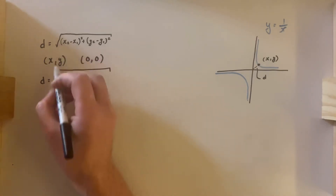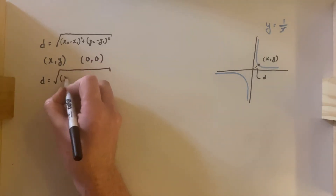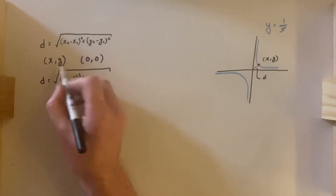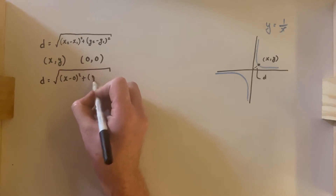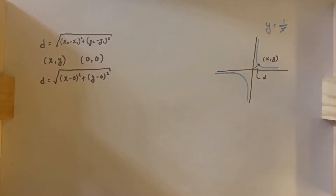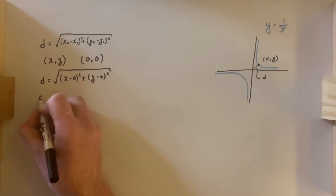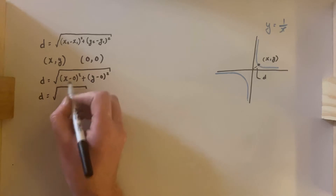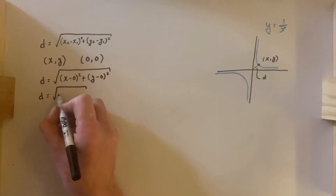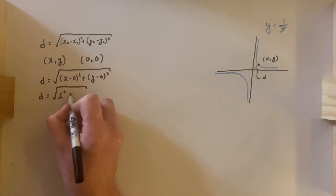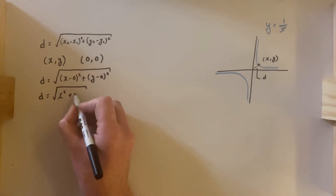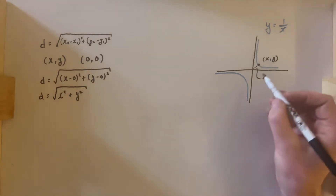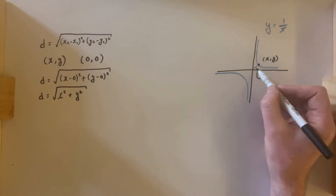Our two points are x comma y, our generic point on the graph, and the origin 0, 0. Plugging these into our distance formula: d equals the square root of (x minus 0) squared plus (y minus 0) squared. Working this out, x minus 0 squared is x squared, and y minus 0 is y, so I have y squared. That is the distance from point x, y to the origin.